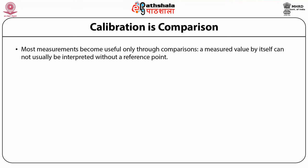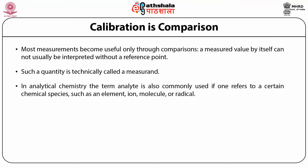The raw data in most chemical measurements are recorded in units of potential differences — for example, volts or currents in amperes — that can be actuated by many different phenomena, not necessarily the quantity we need to measure. Such a quantity is technically called a measurement. In analytical chemistry, the term analyte is also commonly used, referring to a chemical species such as an element, ion, molecule, or radical which is to be analyzed.